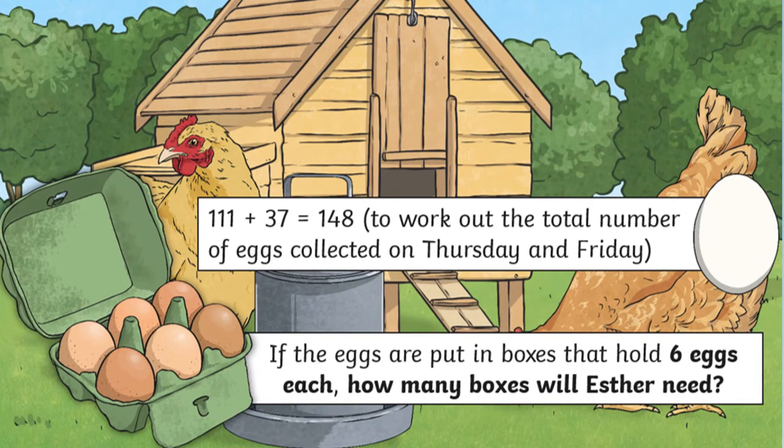The next step you needed to do is an addition. Now we know how many eggs they collected on Thursday and how many eggs were collected on Friday. If we add them together we can work out the total number of eggs collected. So 111 add 37 gives us 148. Did any of you work out what the next step should be?